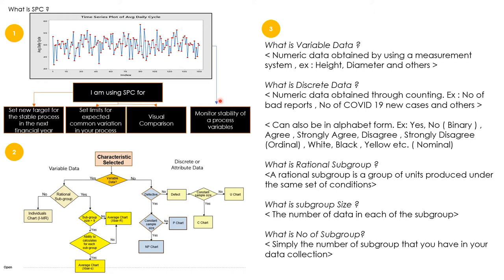If the variation is expected, we can say the process is in control. If the variation is not expected, we conclude the process is out of control. Beyond monitoring stability, I also have experience using SPC to set a KPI target and to set limits for the process — the UCL and LCL — which can be incorporated into our SOP.